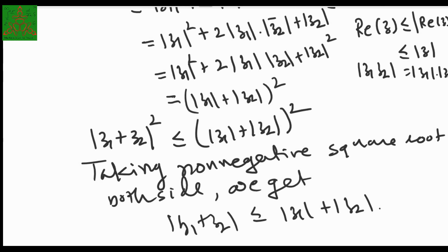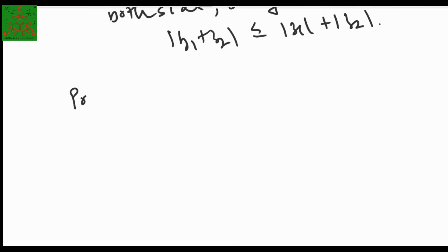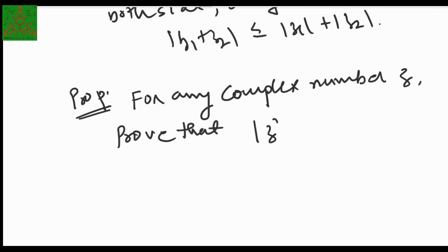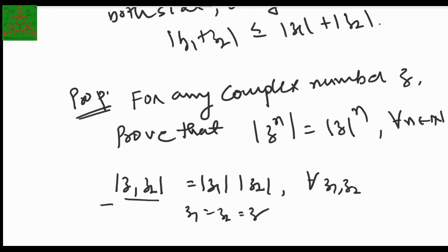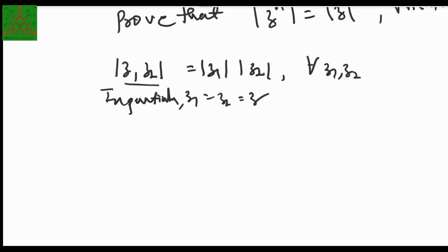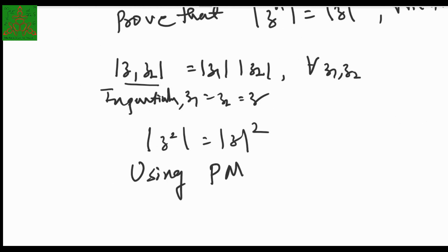One more property: for any complex number z, |z^n| = |z|^n for any n ∈ ℕ. This result follows from |z₁ · z₂| = |z₁| · |z₂|. In particular, setting z₁ = z₂ = z gives |z²| = |z|². One can then prove the general case by PMI (Principle of Mathematical Induction).